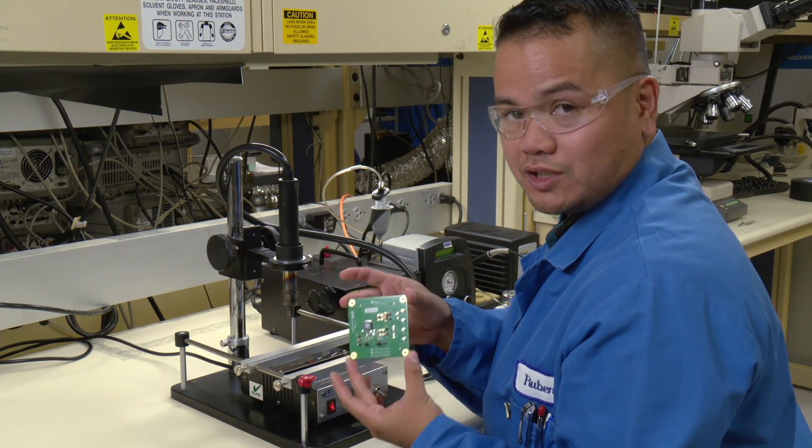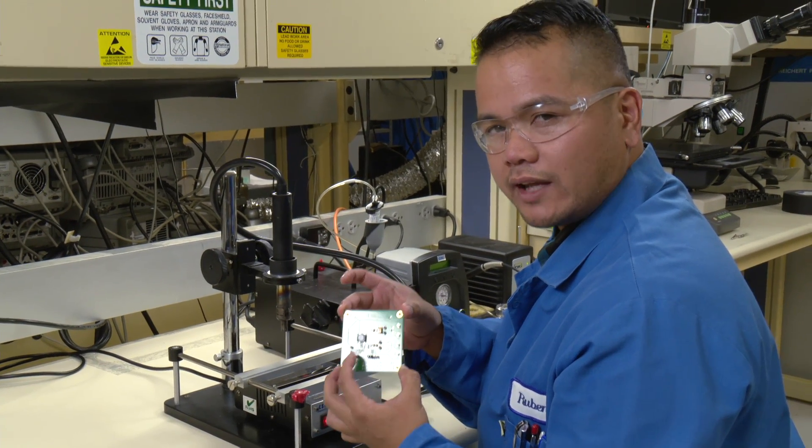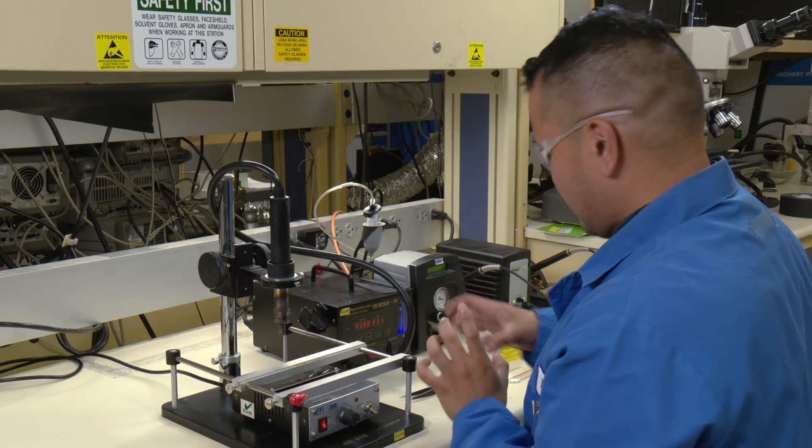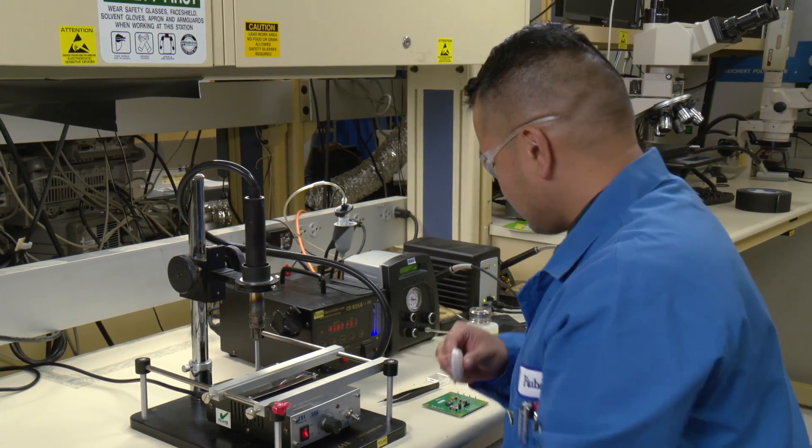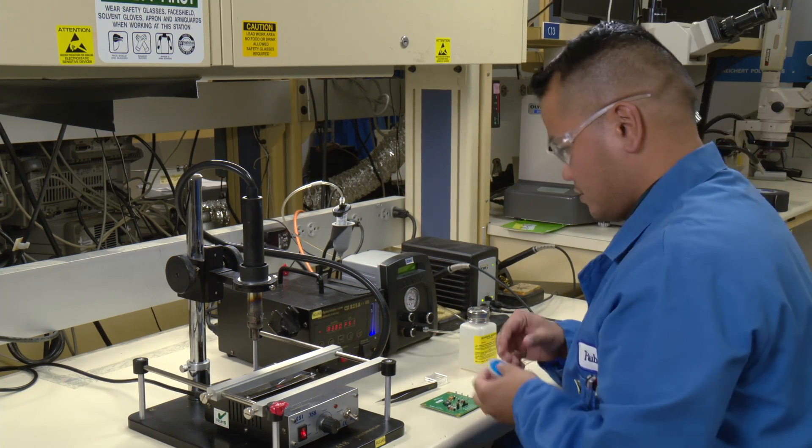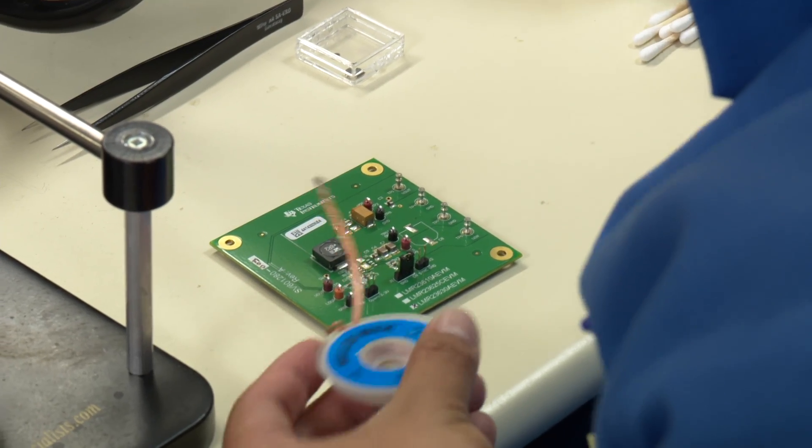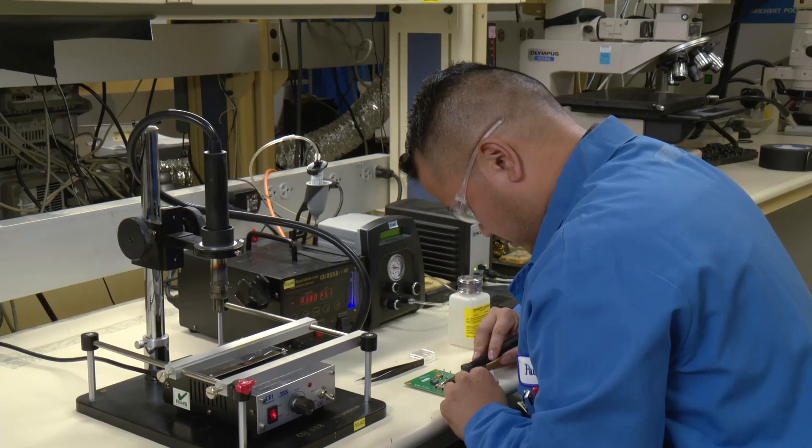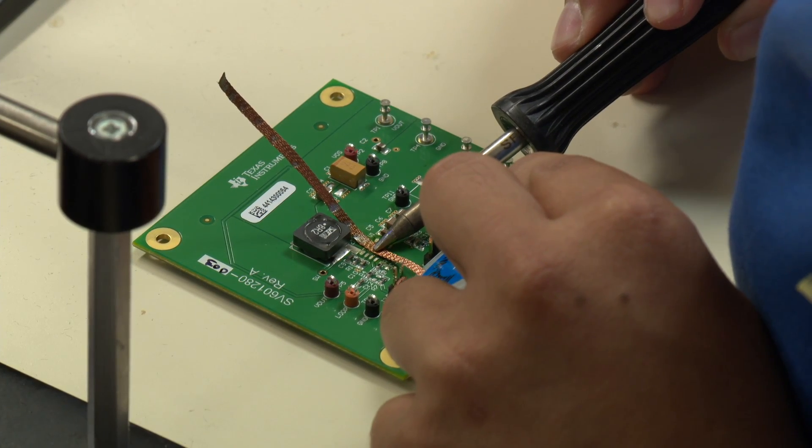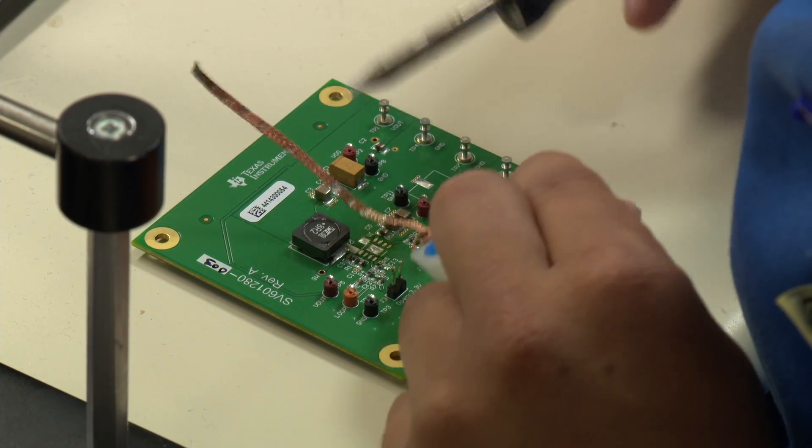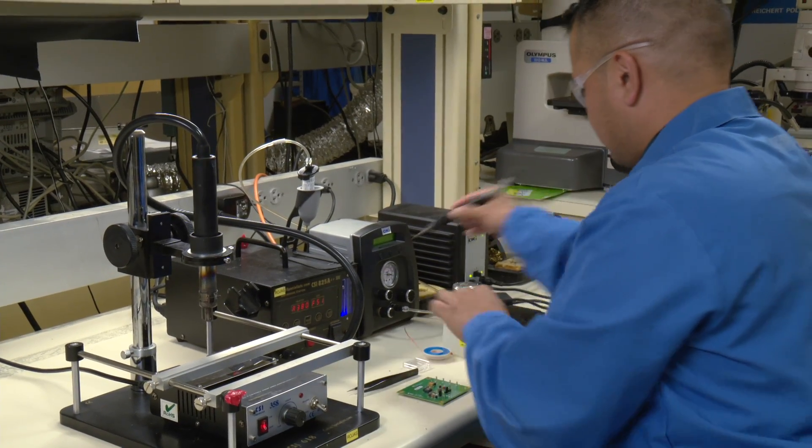Now it is ready to be remounted with the new part. But first, I'm going to clean up the landing area. With that, I'll be using the solder braid and my soldering irons. I'll take the solder braid and the soldering iron.